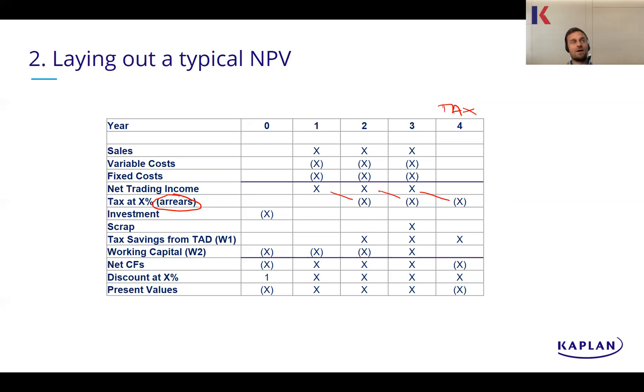We don't want to be putting any sales in there or scrap value is often something that people accidentally put into that year. This is actually a three-year project with three years worth of sales and so on. But because tax in arrears, we've gone into that fourth year column. So I'd always start with sales costs. There might be more of them. There might be different variable costs, different fixed costs, keep them separate if necessary. And you may well need to inflate those if you're told to at the specific rates. Add all those up. That'll give you your net trading income. We then pay tax on it. Your initial investment and scrap should be nice, straightforward marks.